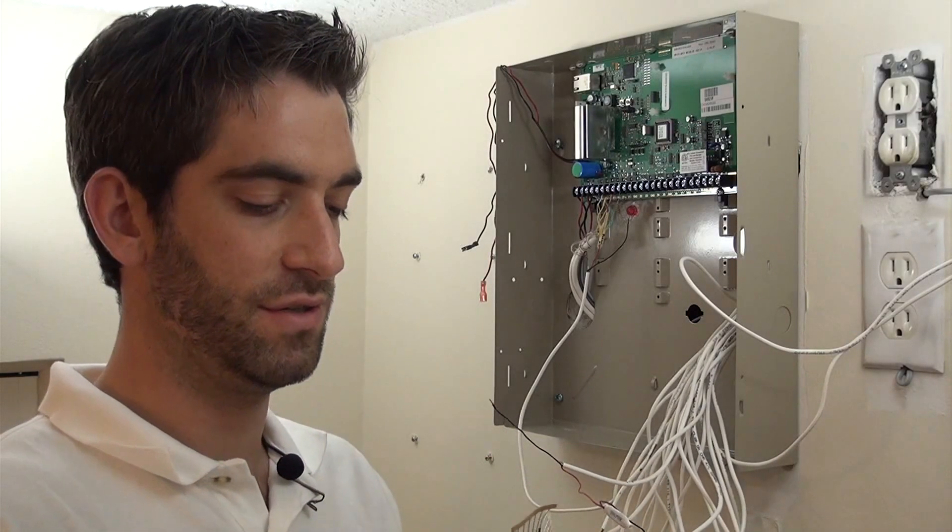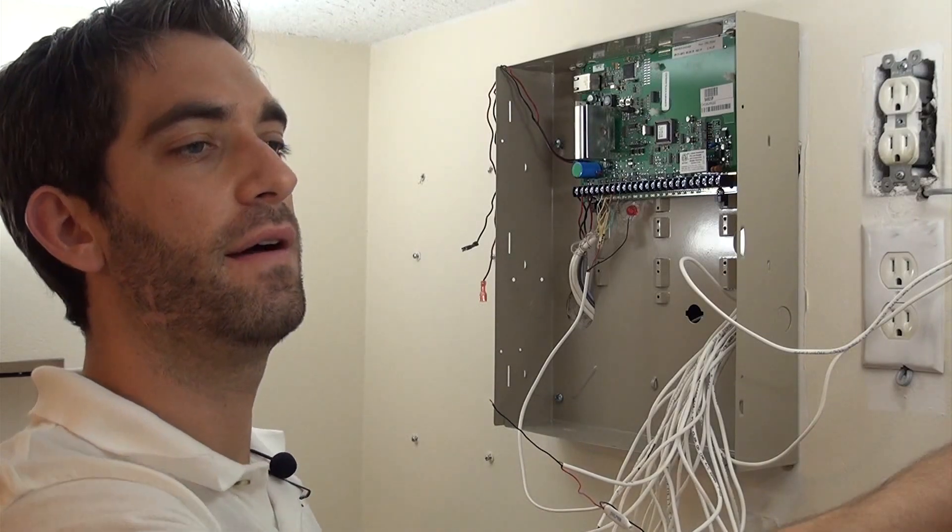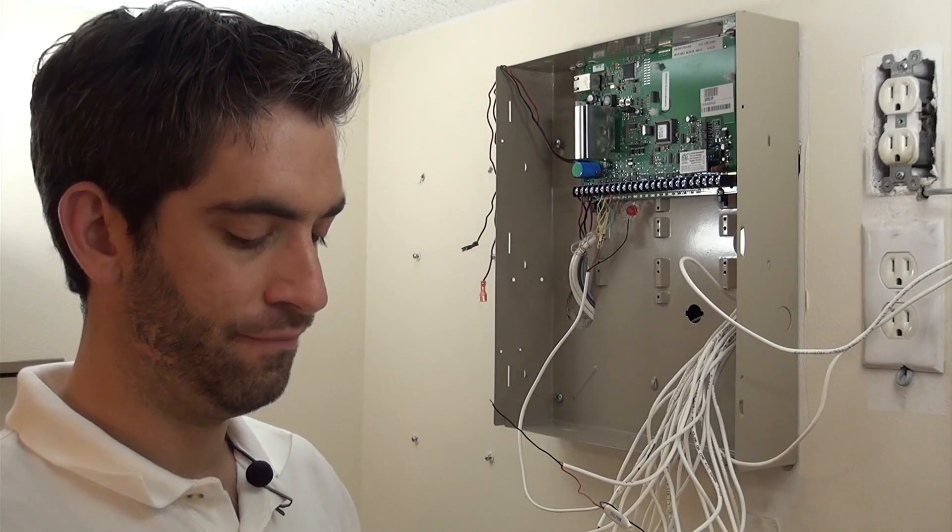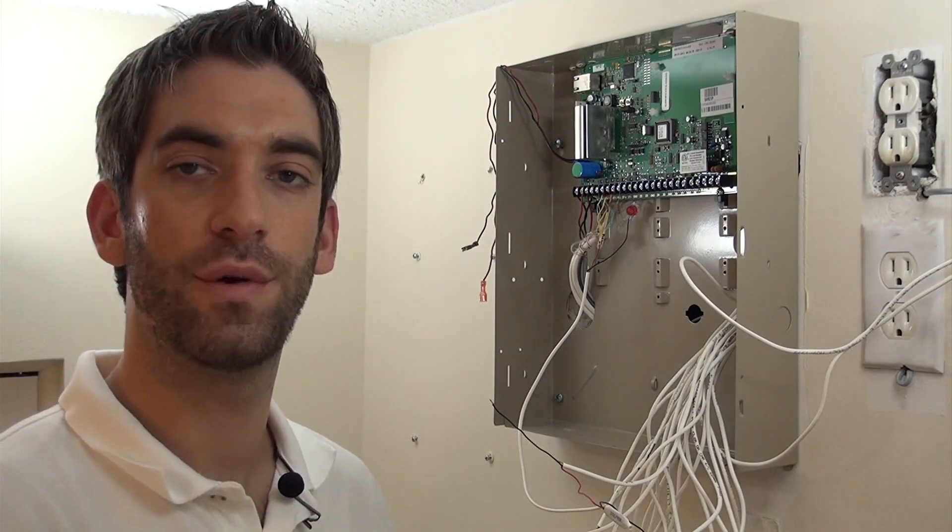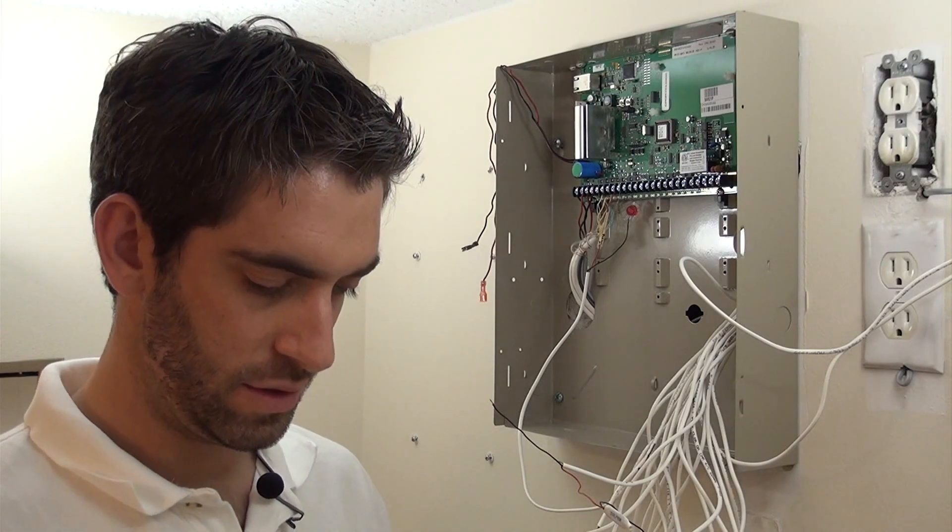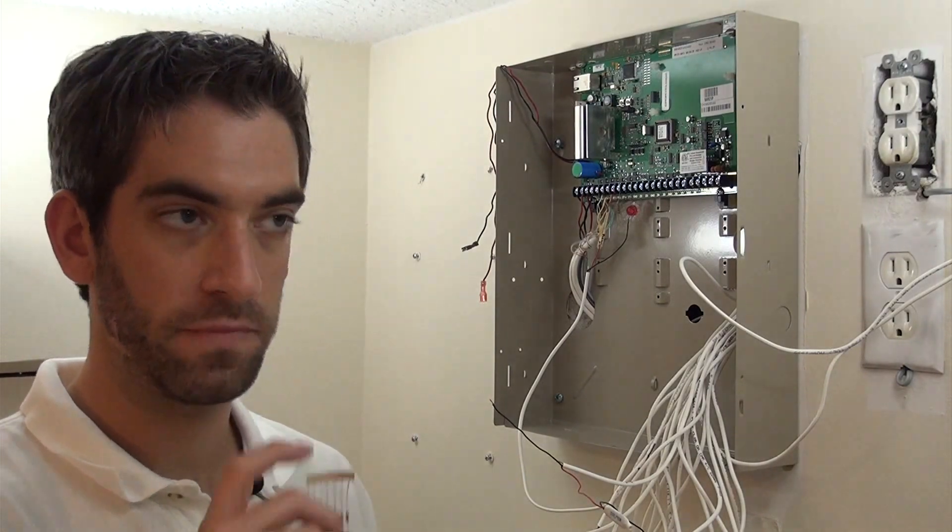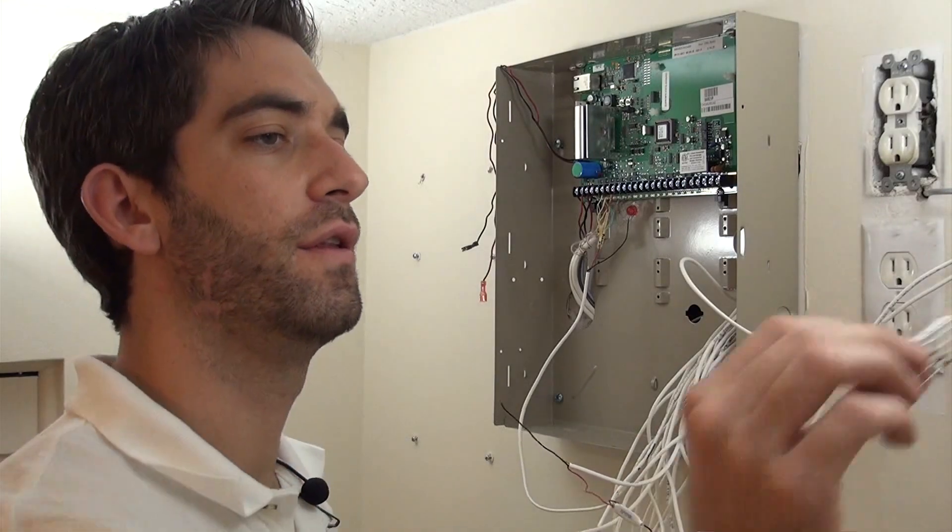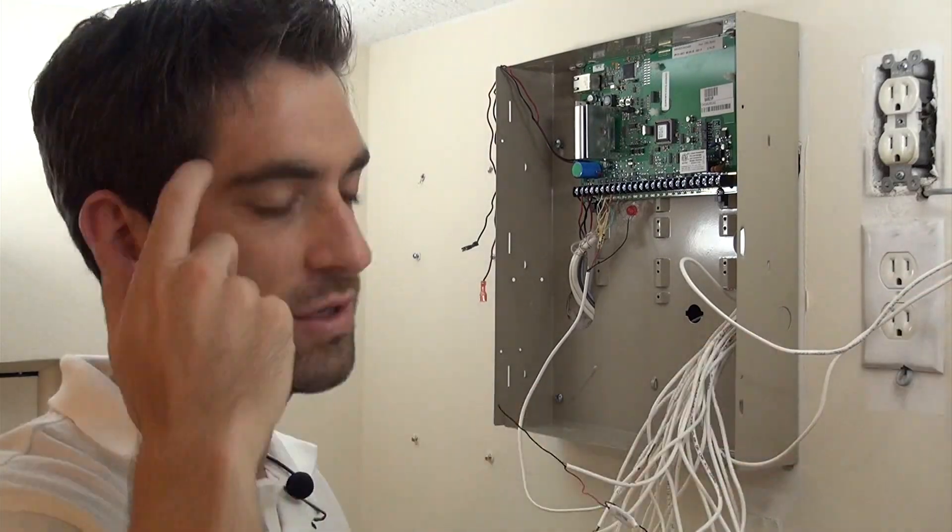So we've got our two sets of resistors here, and we've got our legend here to show us which is which. Important thing to note when you're doing your zone doubling is the 3Ks, the ones with orange, are going to go for the low side of the zone or the lower number of the zone, and the other ones for the higher number.